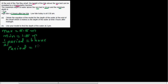One more piece of information: the low tide is at 6:30 am. We want to obtain the equation of the model for the depth of water, where d in meters is the depth of water and t is hours after midnight.